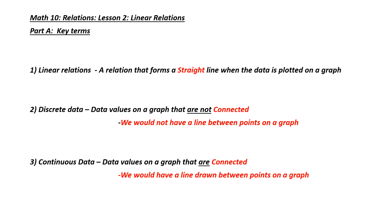The second term is discrete data. Discrete data is data that, when we graph it, is not connected — it is just a series of points. We would not have a line between the points. The third term is continuous data. Continuous data is where we do connect the points, or we do draw a line between them.